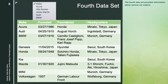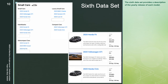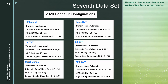The fourth dataset provides information about various car makers. The fifth dataset provides information for some models produced by each car maker. The sixth dataset provides a description of the yearly release of each model. The seventh dataset describes various configurations for some yearly models.